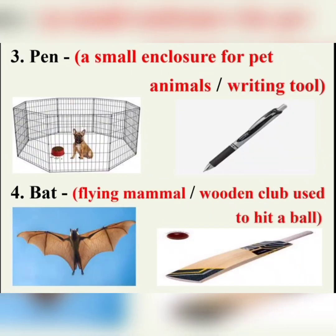The next word is 'pen.' It's a small enclosure for pet animals, and the other meaning is the pen we use to write — a writing tool. And the next one is 'bat.' Bat is a mammal, a flying mammal. And the other bat is a cricket bat — a tool that we use to hit a ball.